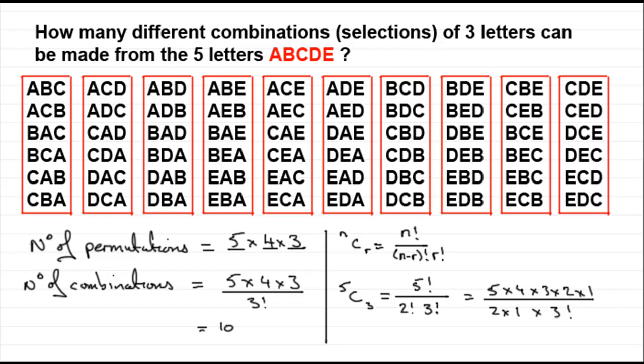And can you see that 2 times 1 cancels out with the 2 times 1 there. And so you're just left with 5 times 4 times 3, all over 3 factorial, which is what we had over here. And so it comes to 10. So this is a handy way of calculating combinations, when you've got n different items and you want to select r different items.